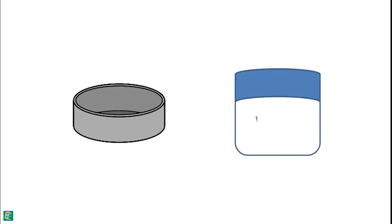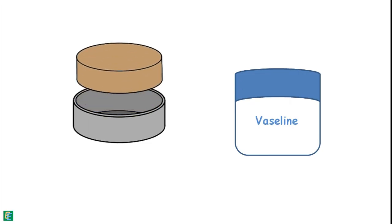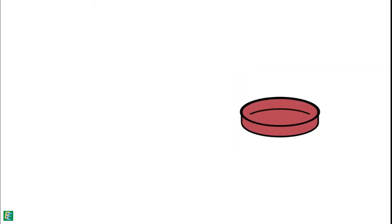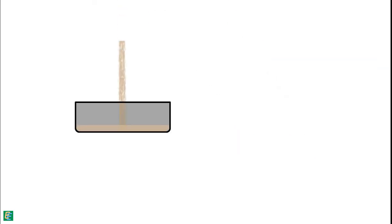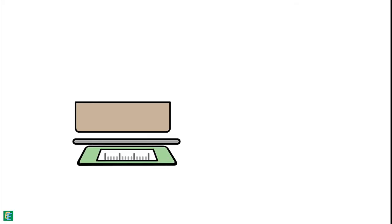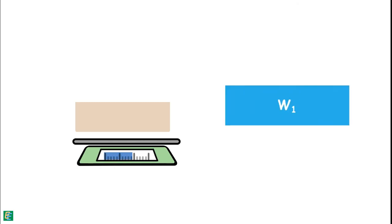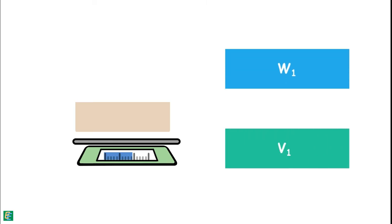The inside of the dish is coated with a thin layer of Vaseline so that the soil pad can be removed easily once dried. The prepared soil sample is placed in the dish in 3 layers by continually tapping the dish on a hard surface to ensure removal of any entrapped air. After completely filling the dish, excess soil is removed and the weight of the dish is taken. By subtracting the weight of the dish, only the weight of the soil pad is noted as W1. The volume of this soil is noted as V1, which equals the volume of the empty dish determined earlier.